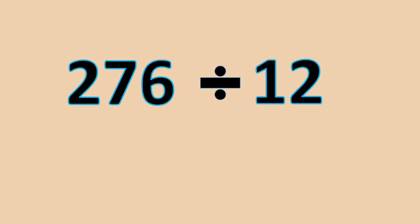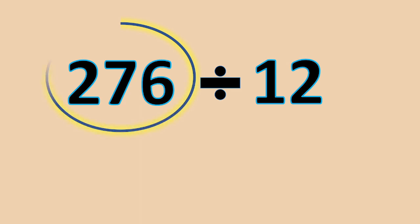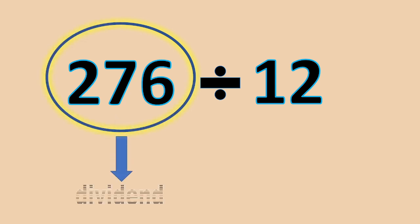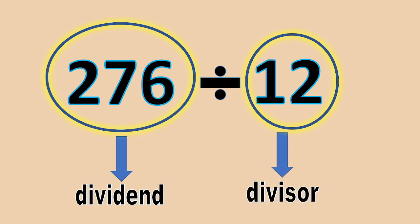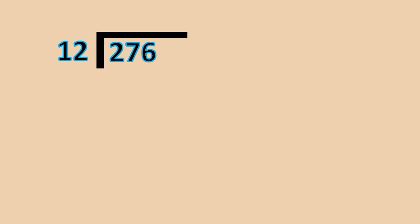Let's answer this: 276 divided by 12. The number 276 here is what we call the dividend. The number 12 here is what we call the divisor. First, write the problem using a long division symbol like this.